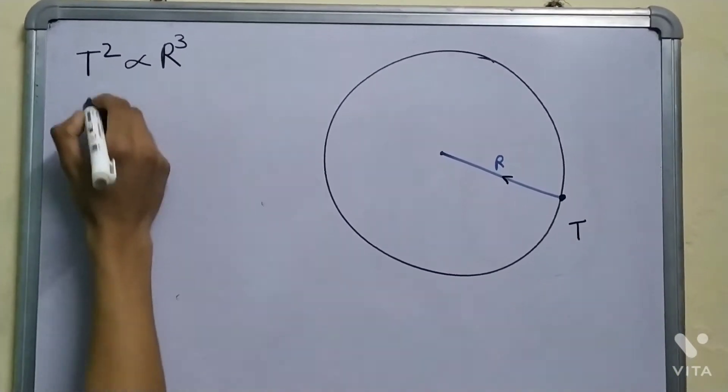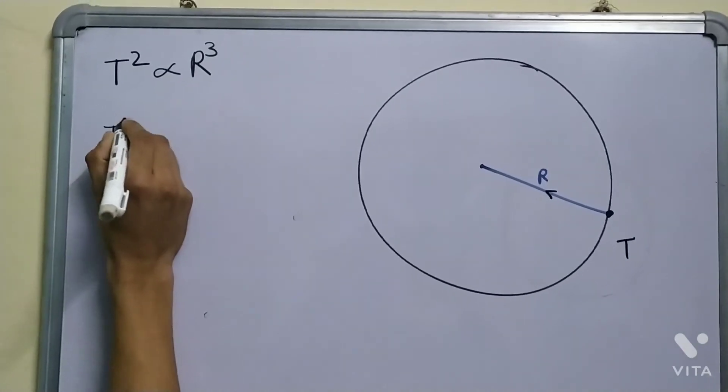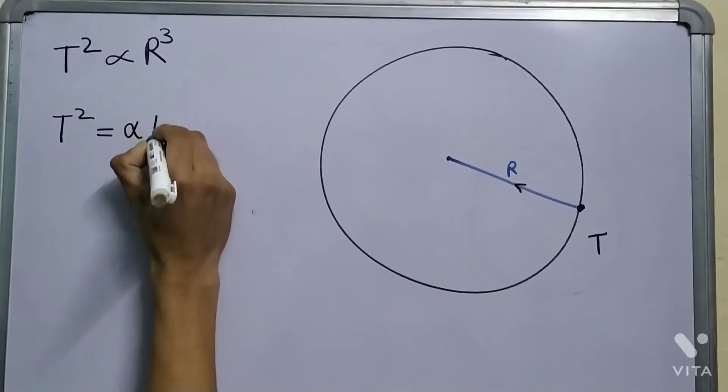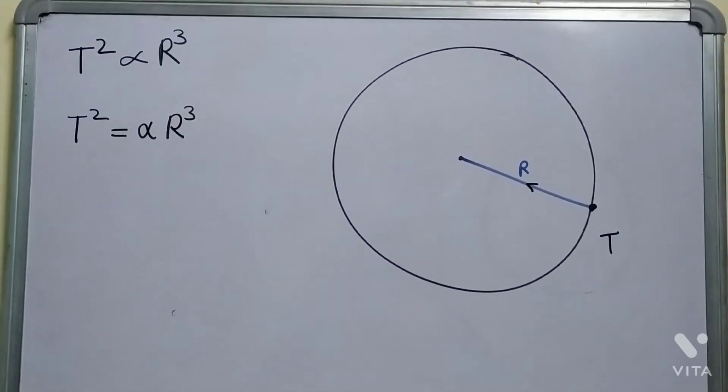Now, since T square is proportional to r cube, we can write T square equal to some constant alpha times r cube. Alpha is just a constant.